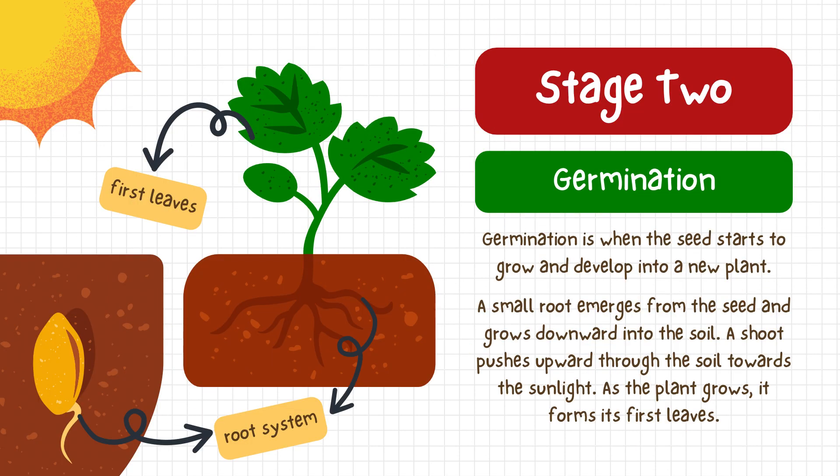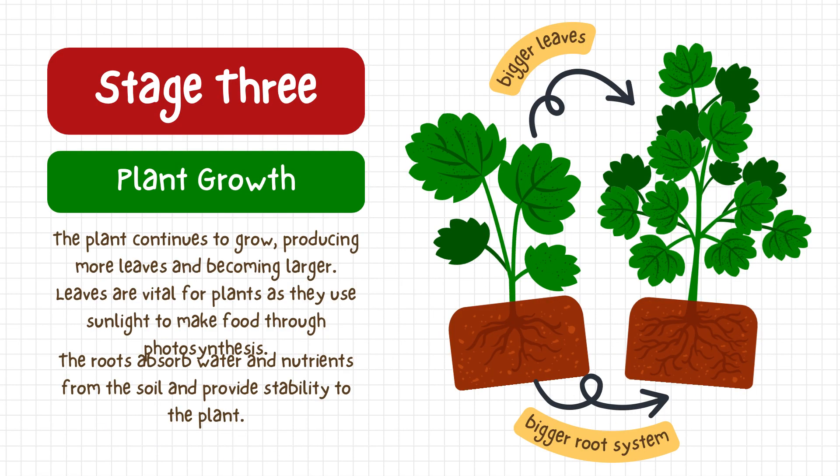Stage two is germination. Germination is when the seeds start to grow and develop into a new plant. A small root emerges from the seed and grows downward into the soil. A shoot pushes upward through the soil towards the sunlight. As the plant grows, it forms its first leaves.